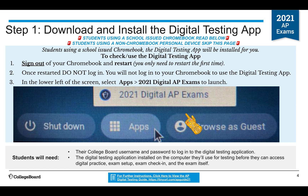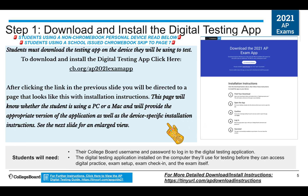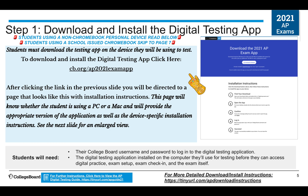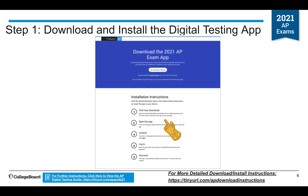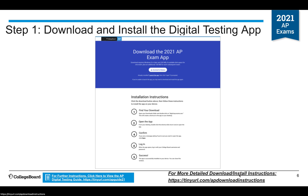For students who must download the testing app on the device they are using — anyone not using a Chromebook — you will go to this link, and it will take you to a page with instructions to download the app. When you go to the page, it knows what type of machine you are accessing it from, so if you have a Mac, it will give you the Mac download; if you have a PC, it will give you the PC download and instructions. If you need more detailed download and install instructions, you can click the link or go to tinyurl.com/APdownloadinstructions.